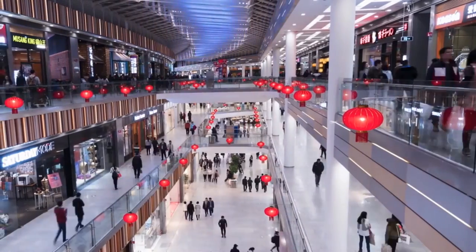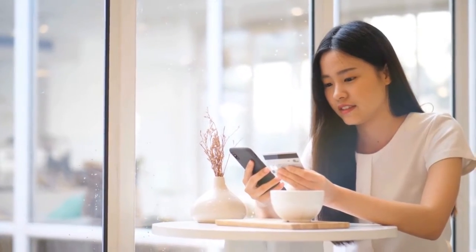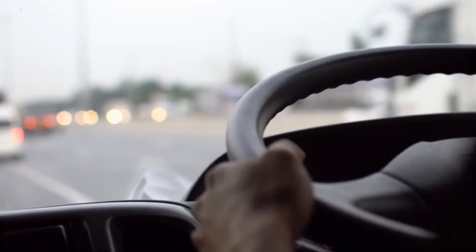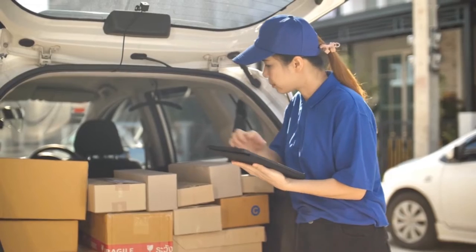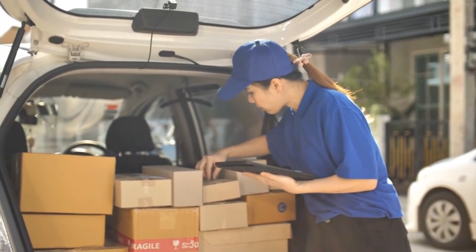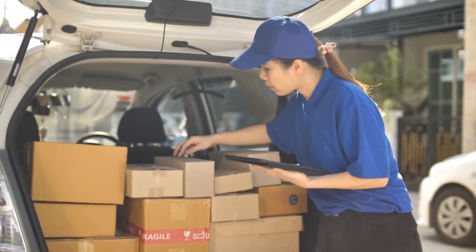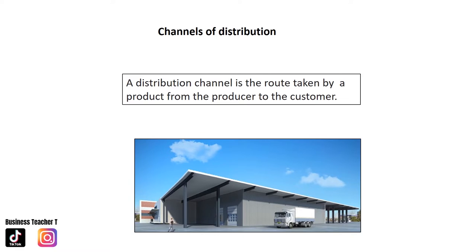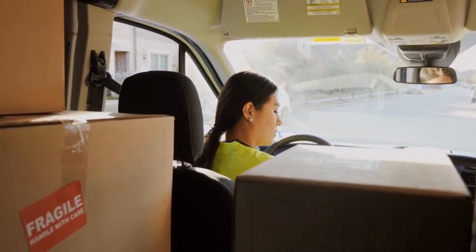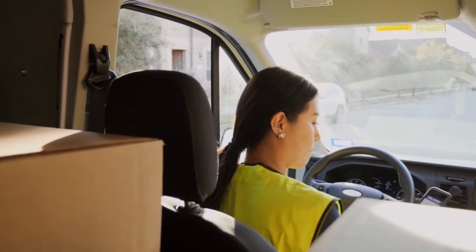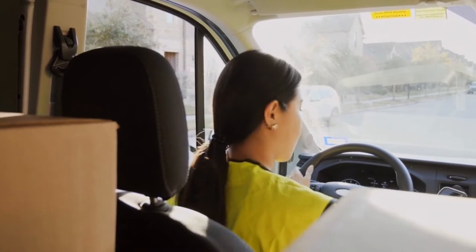Distribution includes how customers can access products and how products are transported from producers to customers. The different ways of moving products from producers to customers are called channels of distribution. The method of distribution used by businesses has changed significantly over the years, especially with the growth of technology that has enabled digital distribution.